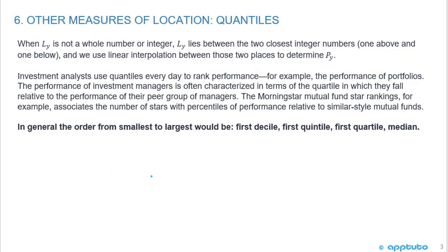When Ly is not a whole number or integer, Ly lies between the two closest integer numbers, one above and one below. We use linear interpolation between those two places to determine the Py.